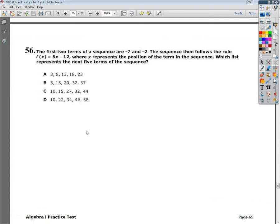The first two terms of a sequence are negative 7 and negative 2. The sequence then follows the rule 5x minus 12, where x represents the position of the term in sequence. We usually refer to that as the n value, the number of the term in the sequence.